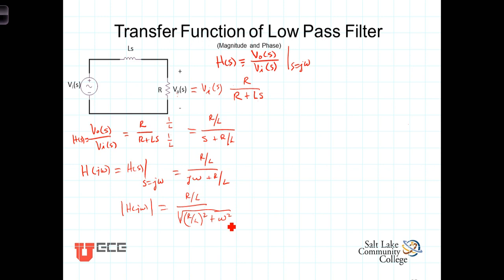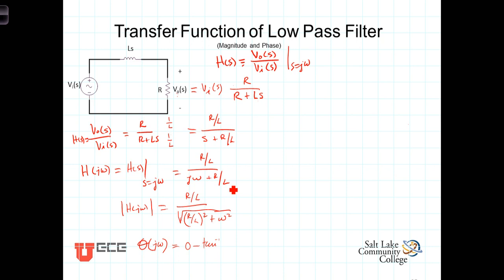The phase of the frequency response function — we'll call it theta of J omega — is equal to the phase of the numerator minus the phase of the denominator. The numerator is a pure real number, so it has a phase angle of zero. The phase of the denominator is equal to the arctangent of the imaginary part divided by the real part, or the arctangent of omega over R over L.